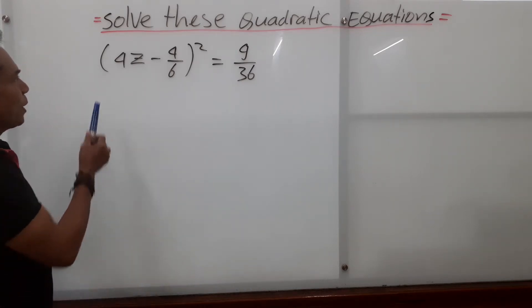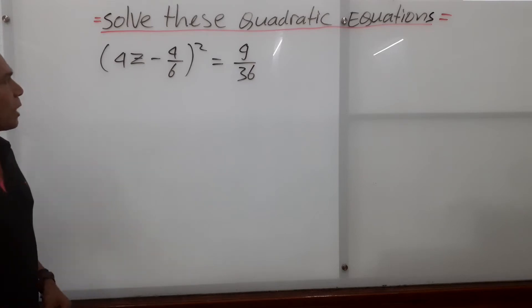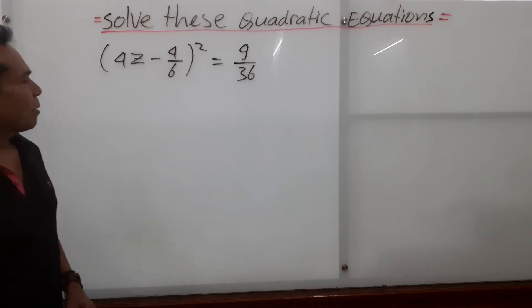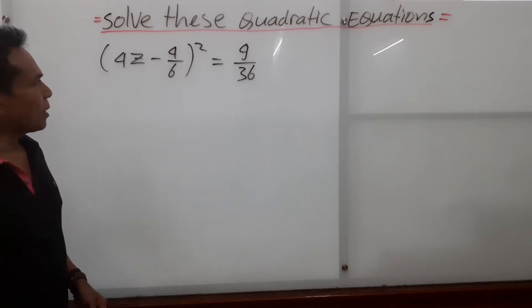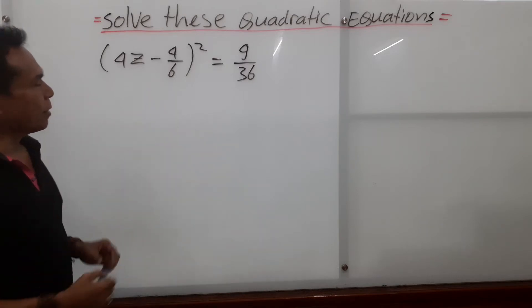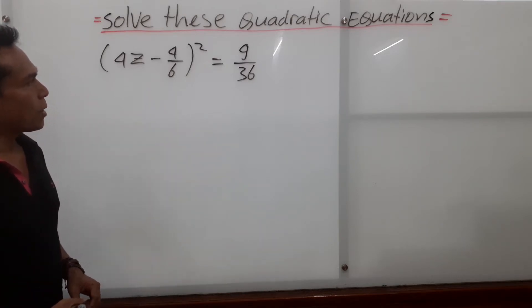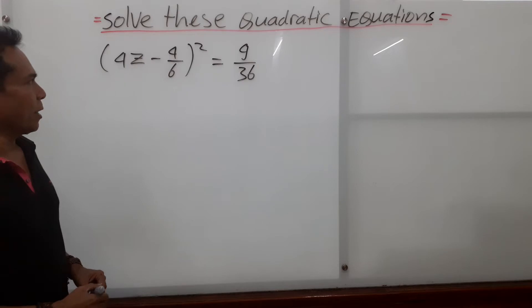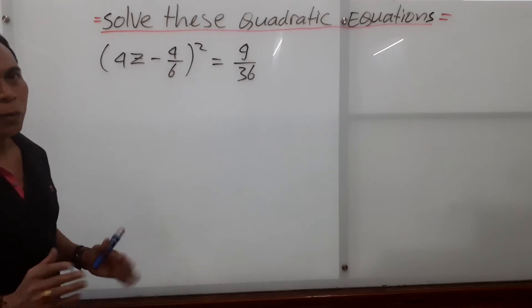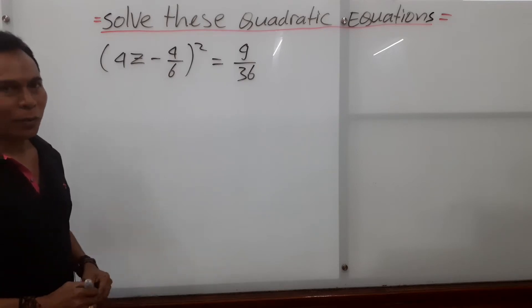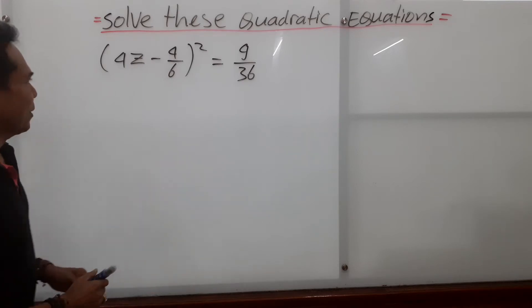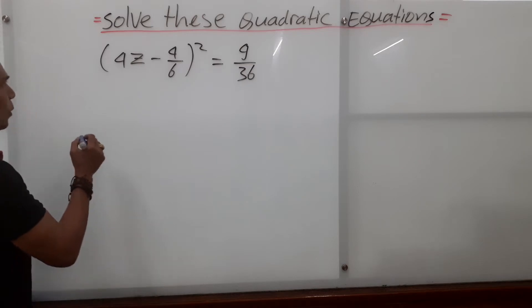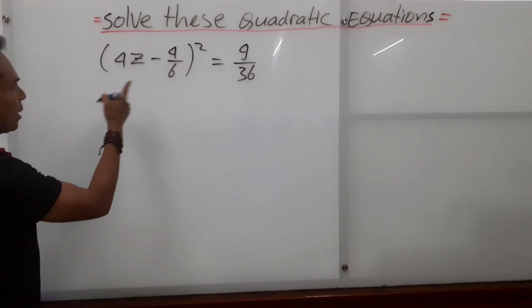We have here: (4z minus 4 over 6) squared equals 9 over 36. Let's see how we solve this question. Let us get rid of the bracket first.